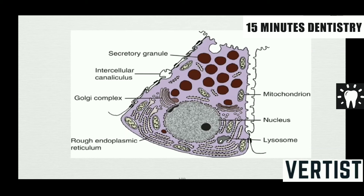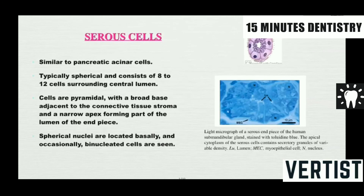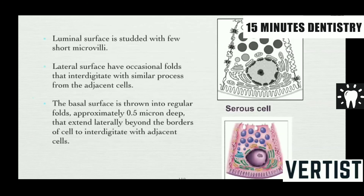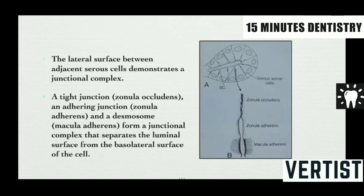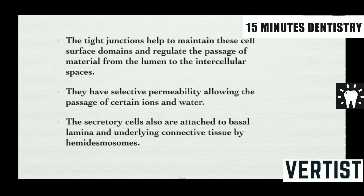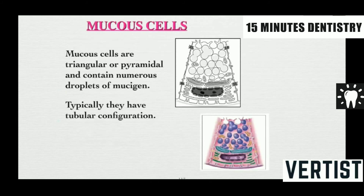Serous cells show prominent rough endoplasmic reticulum as they are active secretory cells. Microvilli can be seen under the luminal surface. The basal surface is thrown into regular folds that extend laterally to interdigitate with adjacent cells. These cells are attached to each other by junctions including zonula occludens, zonula adherens, and zonula desmosomes. The tight junctions regulate passage of material from the lumen to intercellular spaces and allow selective permeability to certain ions and water. Secretory cells also attach to the basal lamina via hemidesmosomes.